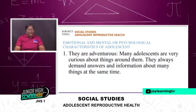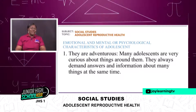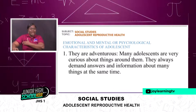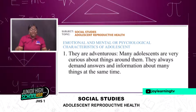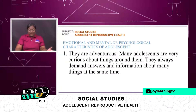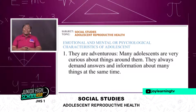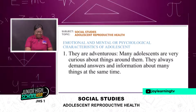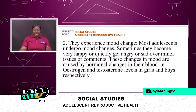Now let's look at some of the emotional and psychological characteristics of adolescents. Number one: they are very adventurous. Many adolescents are very curious about things around them. They want to know why certain things happen — why is there hair in someone's armpit, why is it that this person has become this and that person has not. The adolescent always wants to know what is over there and always wants answers to questions. Many adolescents always demand answers and information about many things at the same time.